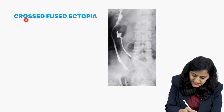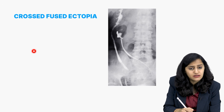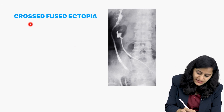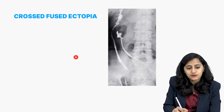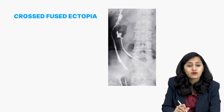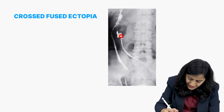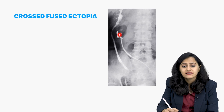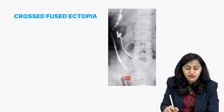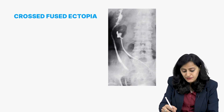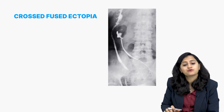Going to the next congenital anomaly: cross-fused ectopia. One renal moiety is on one side; the second renal moiety has crossed to the opposite side and fused with the first kidney. However, the ureter still drains on the original side — that is what is called cross-fused ectopia. So you see one kidney and ureter here, and another renal moiety also on this side, but the ureter drains on the left side, not the right.